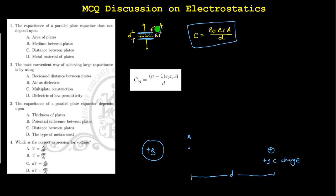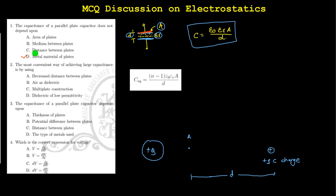The capacitance between the plates depends on the area, it depends on the relative permittivity, and it depends on the distance between the plates. We can conclude here that it does not depend on the metal of the plate — what type of metal you are using. So that is the correct option because the question asks what it does not depend on.